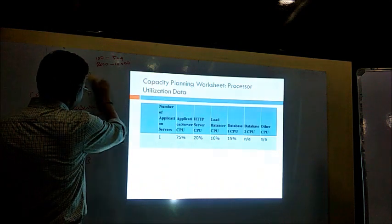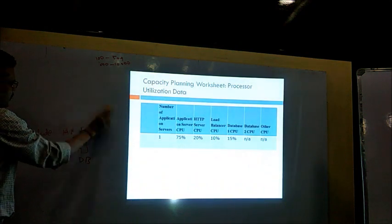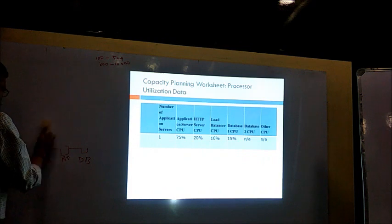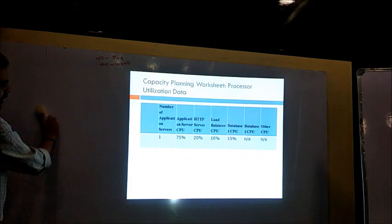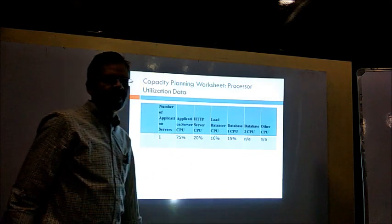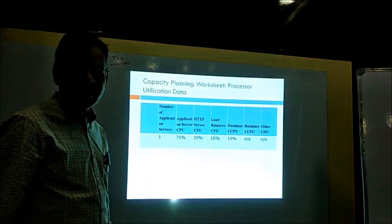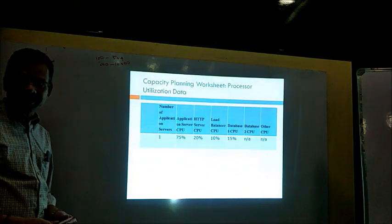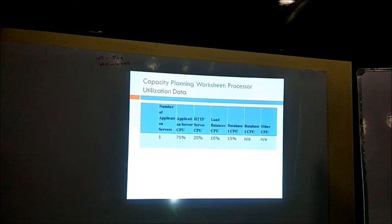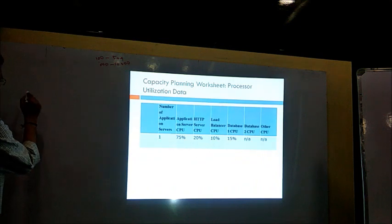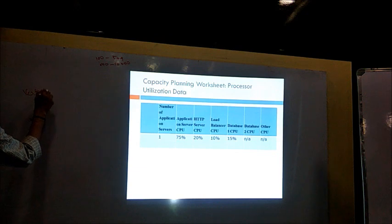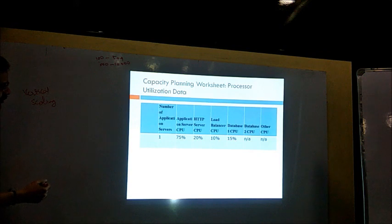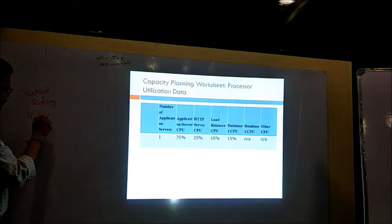We can add more resources — more CPU, more power — or we can add more machines. If you add more CPU or replace with a bigger machine, that is vertical scaling. If you add one more machine in addition to what is already there, that is called horizontal scaling.